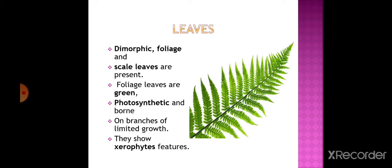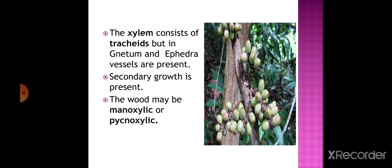Gymnosperms show xerophytic features, that is, desert plant features. The xylem water-conducting tissue consists of tracheids, but in Gnetum and Ephedra, vessels are also present. Secondary growth is present. The wood may be manoxylic or pycnoxylic. Manoxylic wood is porous and soft with more parenchyma and wide medullary rays - example Cycas. Pycnoxylic wood is compact with narrow medullary rays - example Pinus.